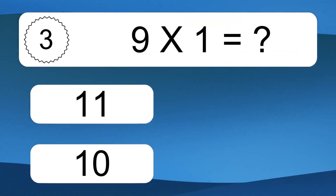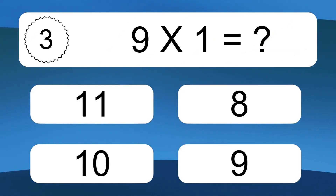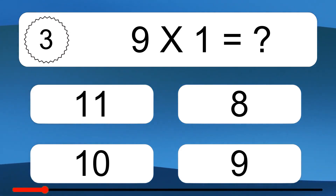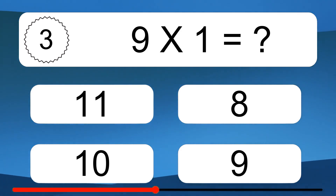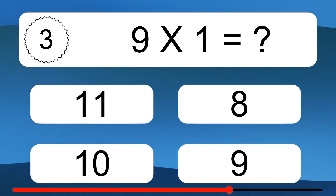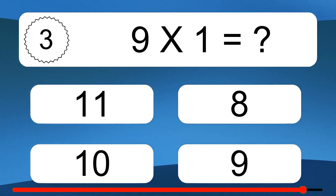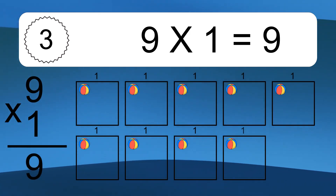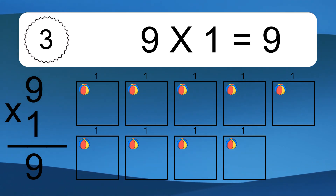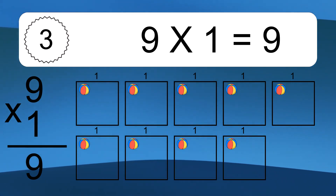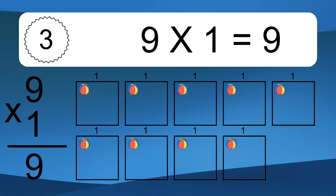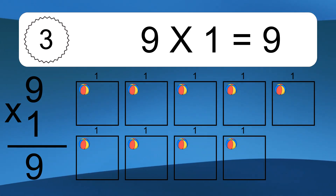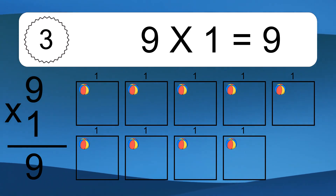9 times 1 equals what? 9 times 1 equals 9. We have 9 boxes, and each box has 1 colorful ball inside. If you count all the balls in all the boxes together, you will have 9 times 1 balls. This equals 9 balls.